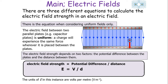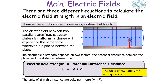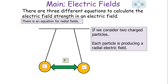Since the units of potential difference are volts and the units of distance are metres, the units of electrical field strength can also be expressed as volts per metre. The units newtons per coulomb and volts per metre are in fact equivalent — they mean the same thing. However, it is standard practice that volts per metre is used only in the context of uniform fields, while newtons per coulomb can be used in any example.